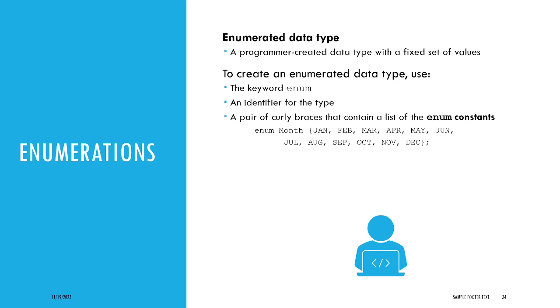To create an enumerated data type, use the keyword enum and an identifier for the type. And finally, use a pair of curly braces that contain a list of the enum constants.